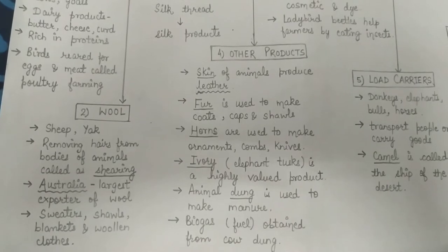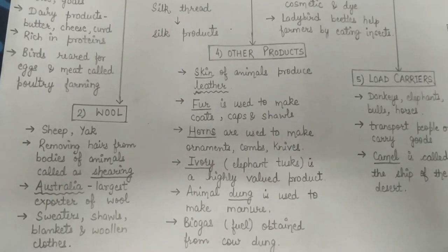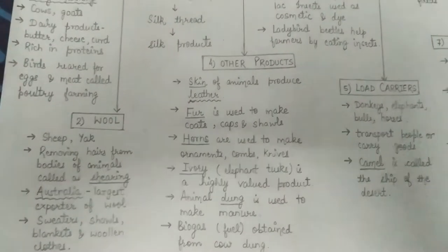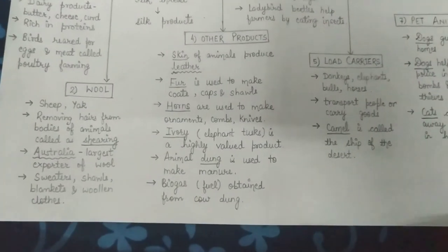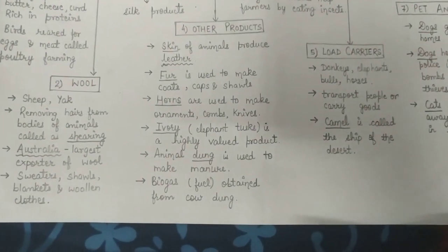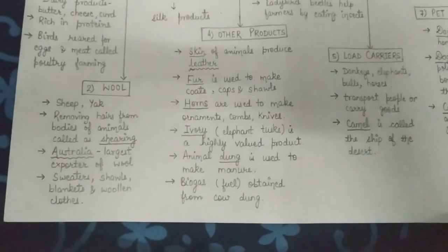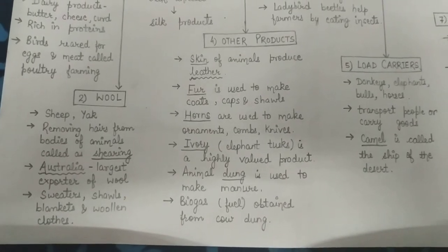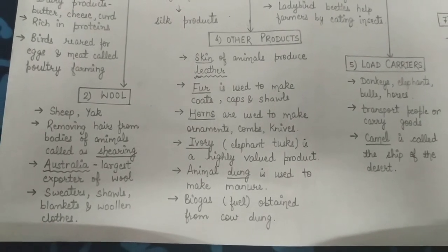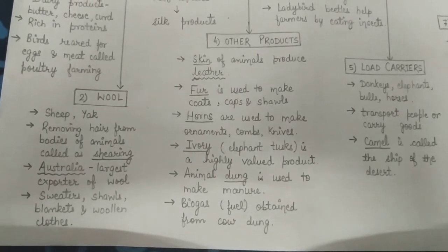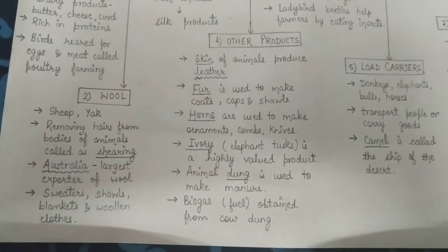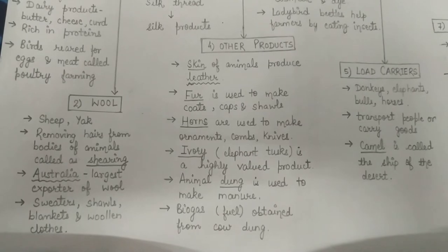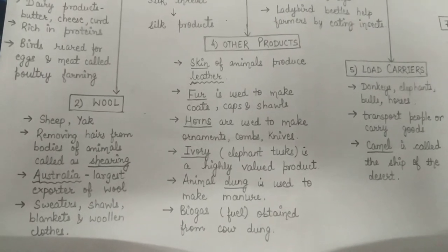As I told you, the term 'reared' means to take care of the animals because they are very useful to us. We must take care of animals and raise them for a particular purpose. Animals such as sheep and yak are reared for wool — we get wool from sheep and yak. Shearing is the process of removing the hairs from the bodies of animals such as sheep and yak.